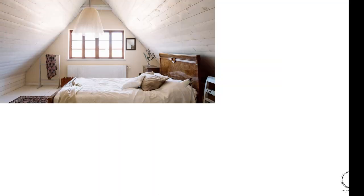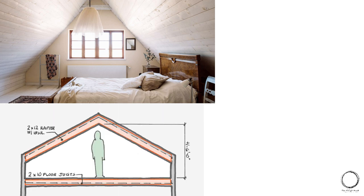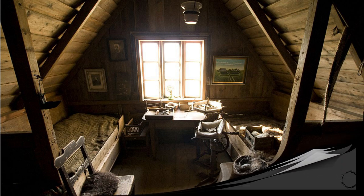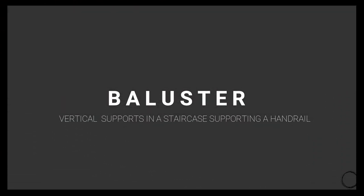Moving on, the next term is attic, which is a room in a roof. As you can see in the image, the sloping roof contains a space which has maximum height at the center and slopes down at the sides. This space can be converted into a small room — and if you've seen the movie Harry Potter, this is the same type of room he has, which is called an attic.